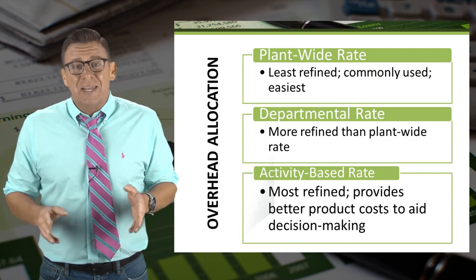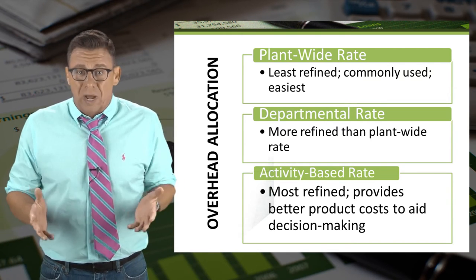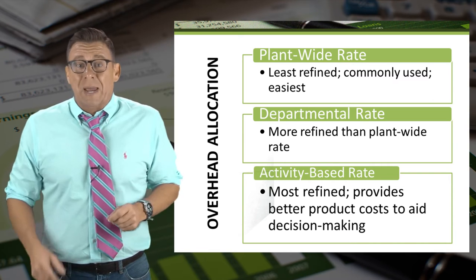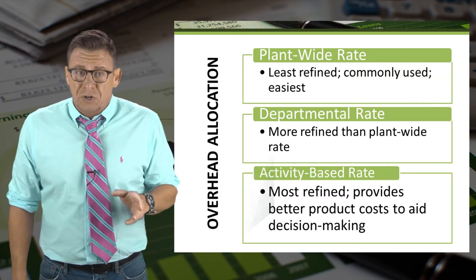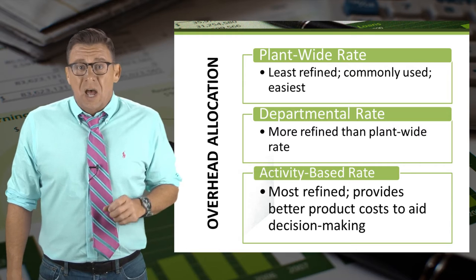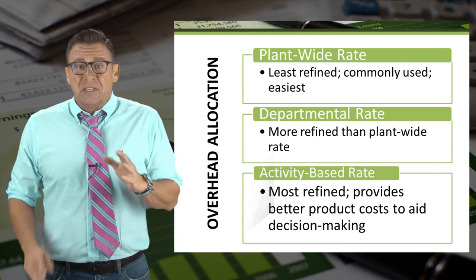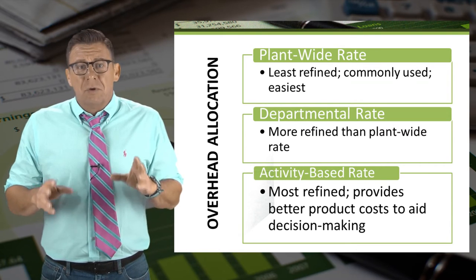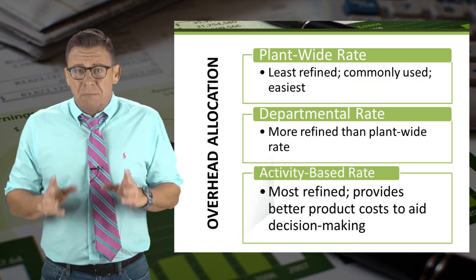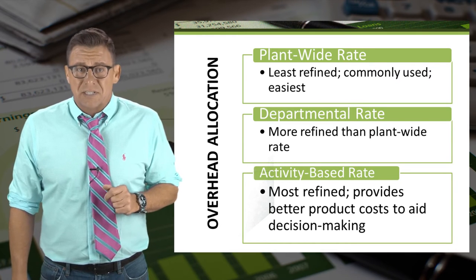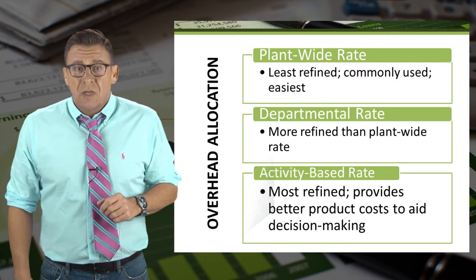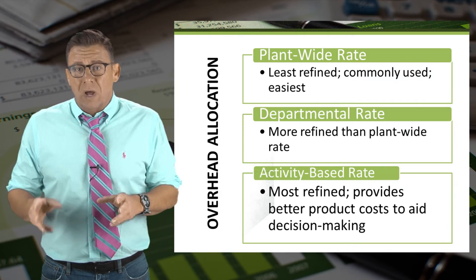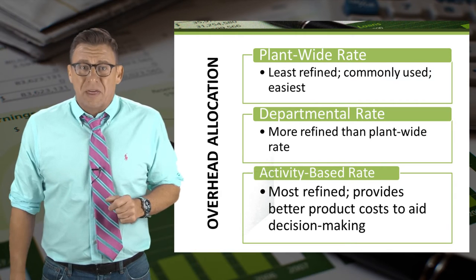The most common is the plant-wide rate, which is what we earlier described as the predetermined overhead rate. Another method is departmental rates. And finally, the most refined method is activity-based costing. This video will revisit the plant-wide rate method.